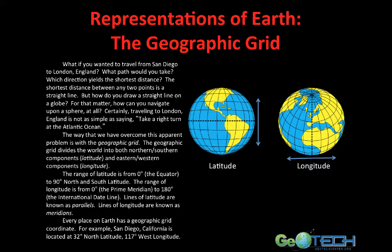The range of latitude begins at the equator, which is 0 degrees, all the way up to 90 degrees north and south latitude, hitting the north and south poles. The range of longitude will also begin at 0, defined at the prime meridian, all the way around to 180 degrees, which is called the international dateline. Lines of latitude are also known as parallels, and lines of longitude are also known as meridians. Every place on Earth has a geographic grid coordinate — for example, San Diego, California is located at 32 degrees north latitude, 117 degrees west longitude. When we put our parallels together with our meridians, we have a series of grids, which is why this is called the geographic grid system.